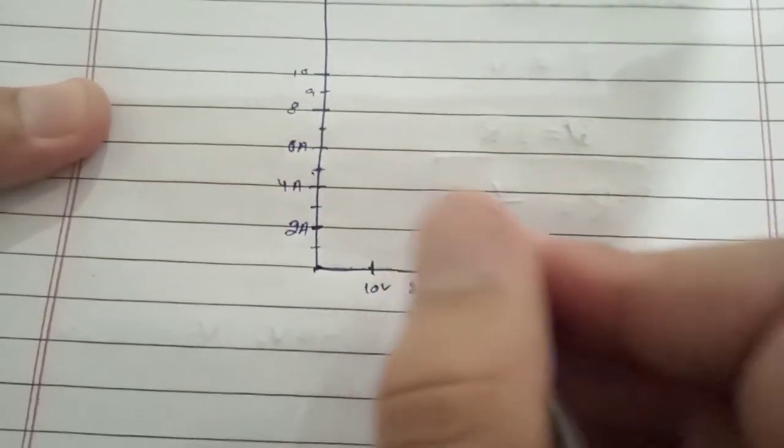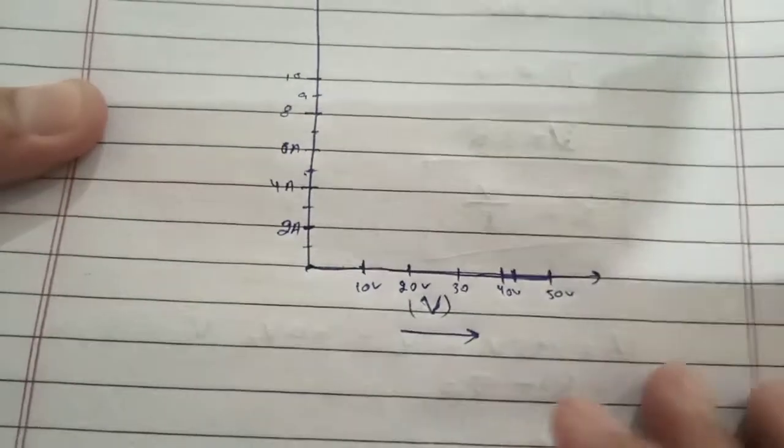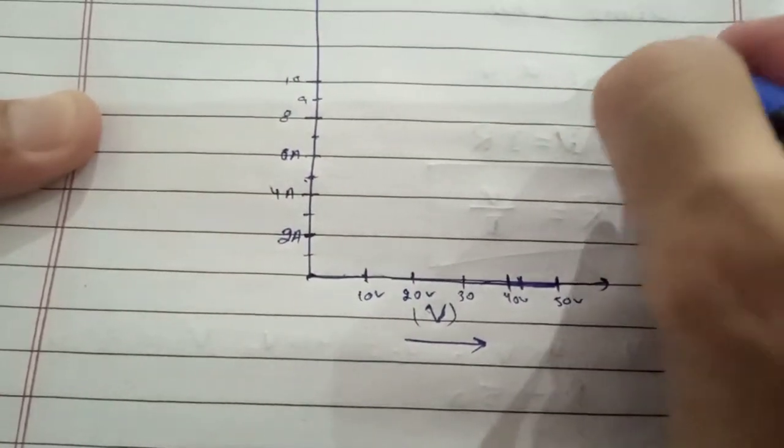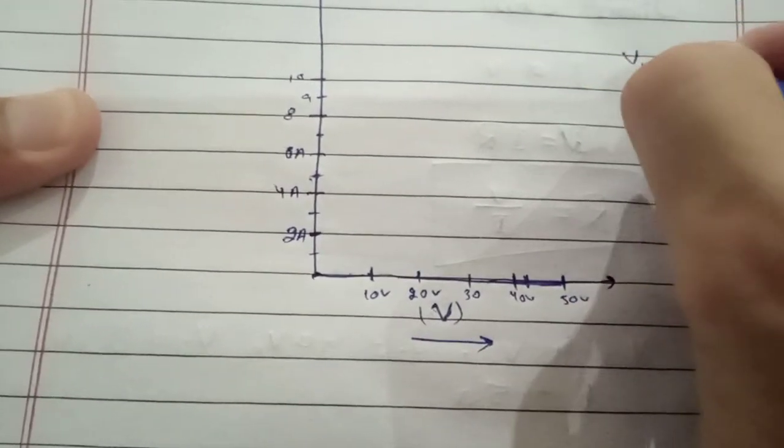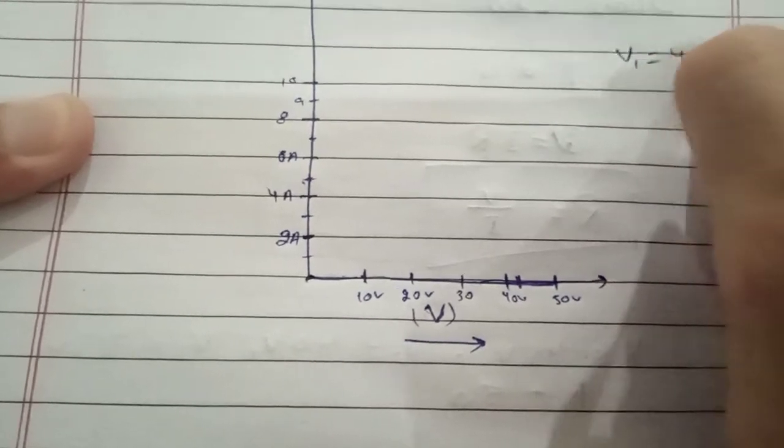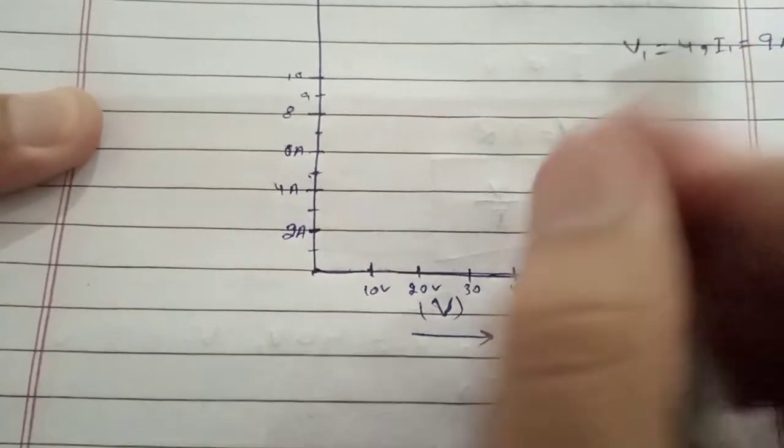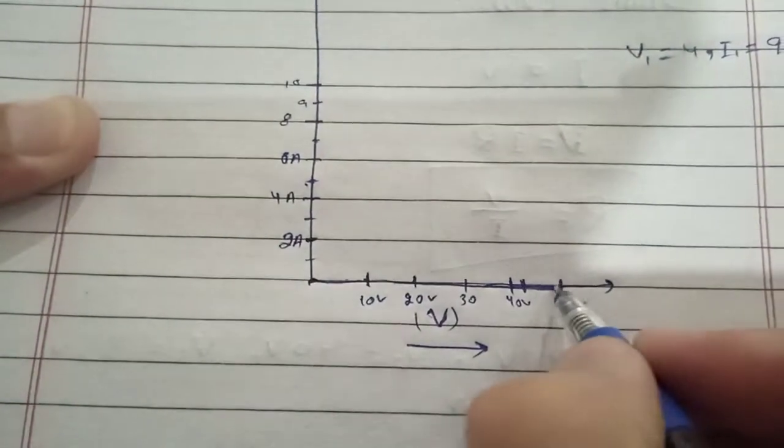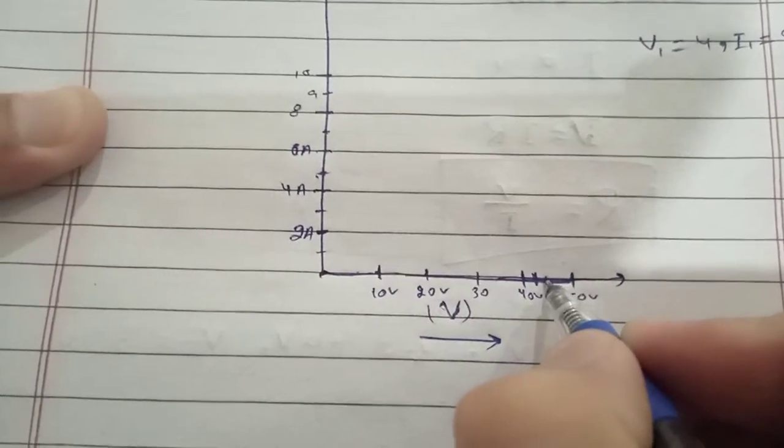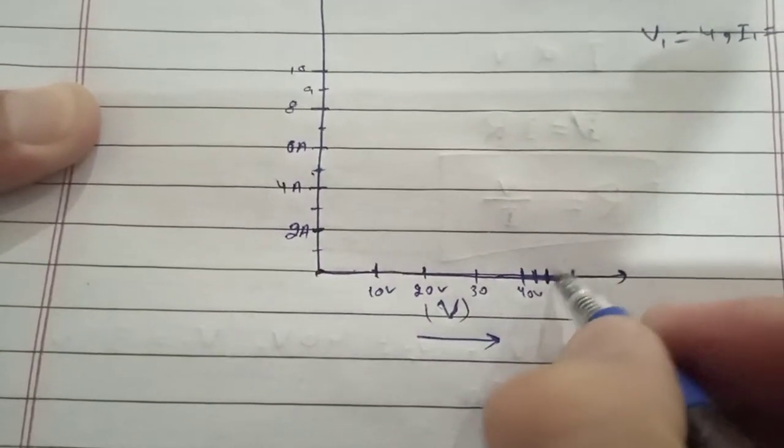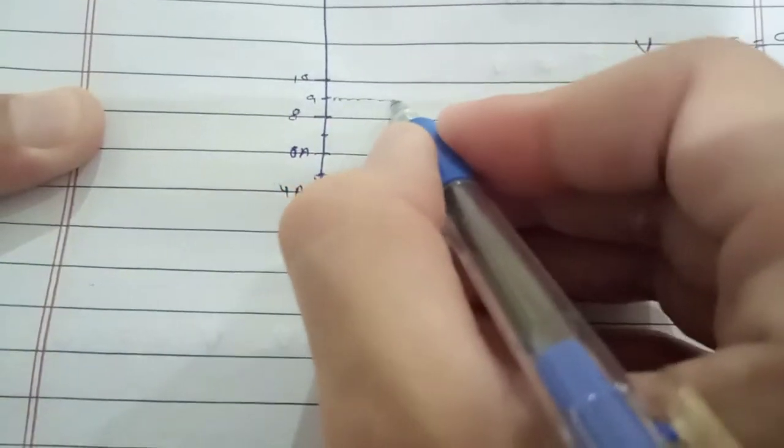This is 9 ampere, this is 7, this is 5, and this is 3, this is 1, and this is 0. Now as you know, from the previous values when V1 was 45 volt and the corresponding value of current was 9 amps, when voltage is 45 volt here is the point, and current was 9 ampere.